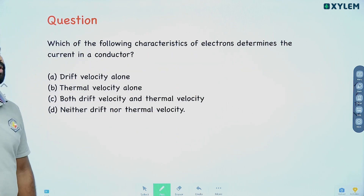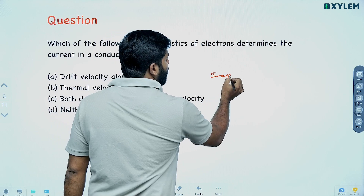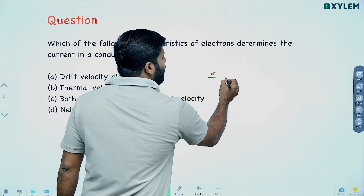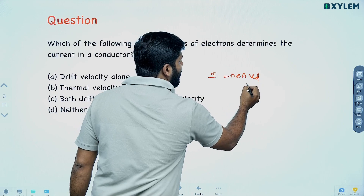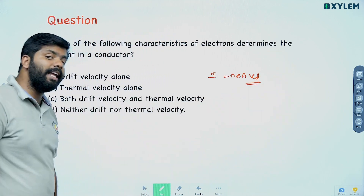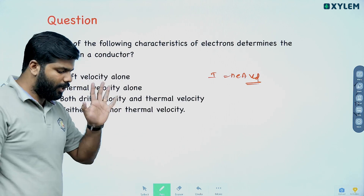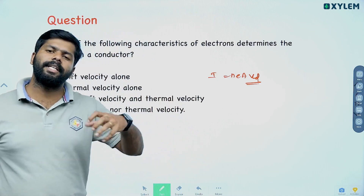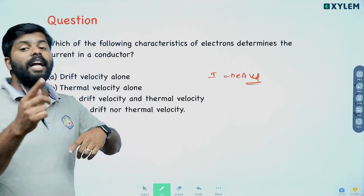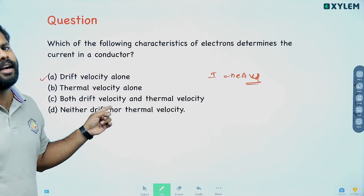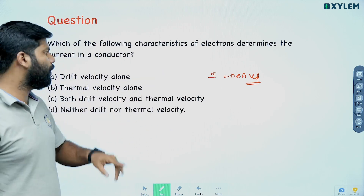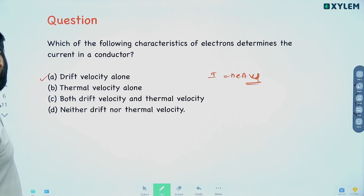Which of the following characteristics of electrons determines the current in a conductor? Using I = nEAV_D, the current depends on drift velocity. Thermal velocity — the random motion of electrons — does not depend on current flow. So drift velocity alone determines the current. That is the correct answer.